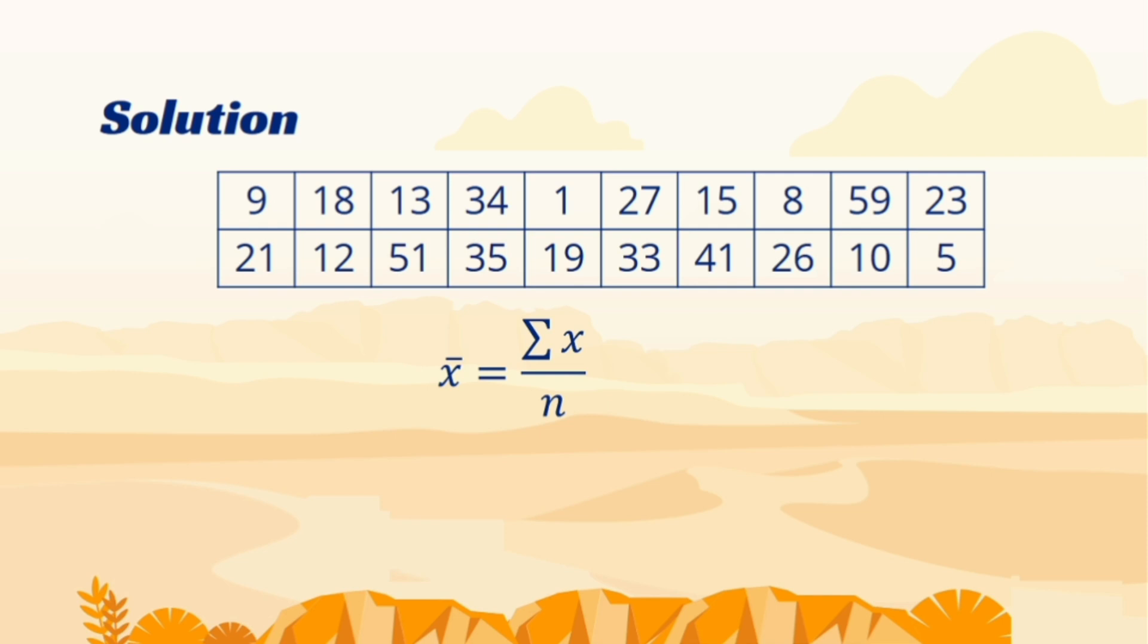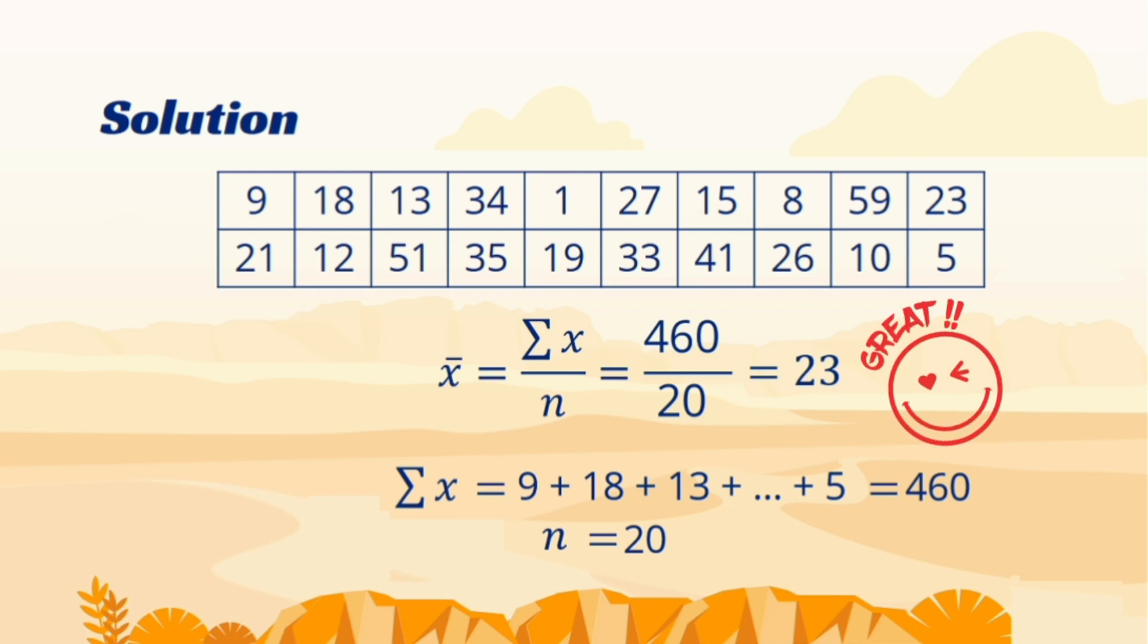As it is an ungrouped data, the average is calculated by this formula. So we first require the sum of all values in our dataset, and as given dataset has 20 observations, by putting all the values in the formula, we get the average 23. It tells us the average time is more than two decades ever since they got married.